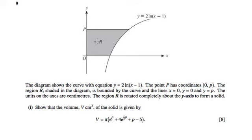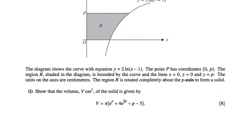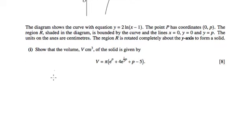So we need to be careful here. We're going to be putting in limits for y, which means the first thing we need to do is make x a subject here. So we've got an equation involving y's, not involving x's. So I'm going to take my y equals 2 ln x minus 1 and make x a subject.